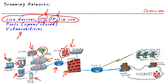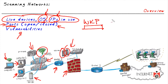We'd like to identify the IPv4 and IPv6 addresses in use by those devices, and in conjunction with active devices on the network it would be great to identify the ports that are open. For example, some well-known ports include port 80, which is the TCP well-known port for HTTP.